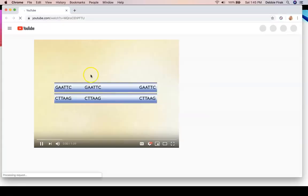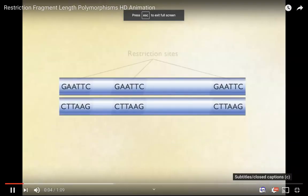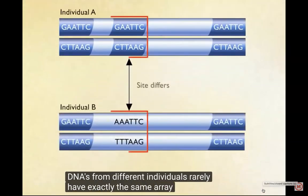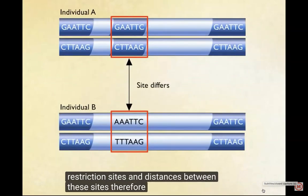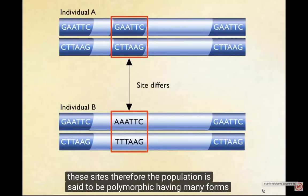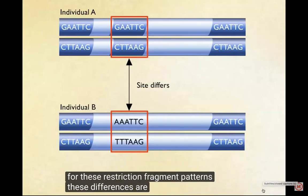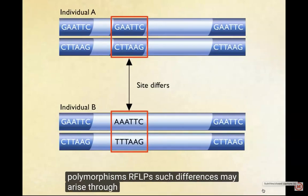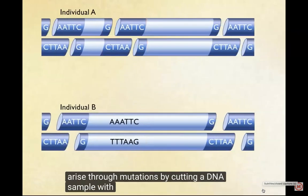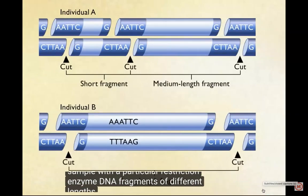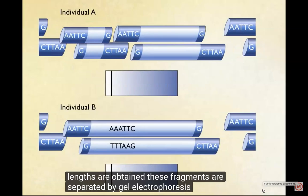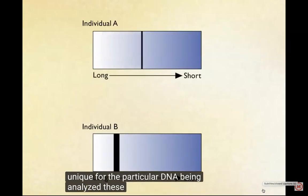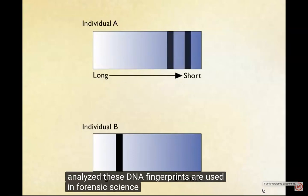Restriction enzymes recognize very specific sequences of nucleotides in DNA. DNAs from different individuals rarely have exactly the same array of restriction sites and distances between those sites. Therefore, the population is said to be polymorphic — having many forms for these restriction fragment patterns. These differences are referred to as restriction fragment length polymorphisms, RFLPs. Such differences may arise through mutations. By cutting a DNA sample with a particular restriction enzyme, DNA fragments of different lengths are obtained. These fragments are separated by gel electrophoresis, providing a pattern of bands unique to the particular DNA being analyzed. These DNA fingerprints are used in forensic science during criminal investigations.